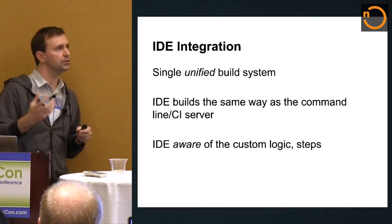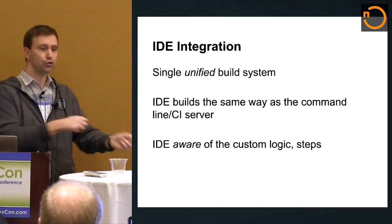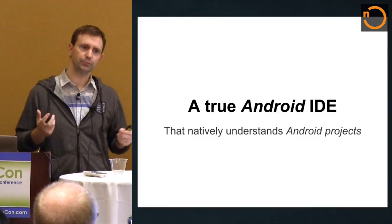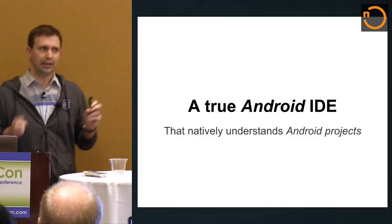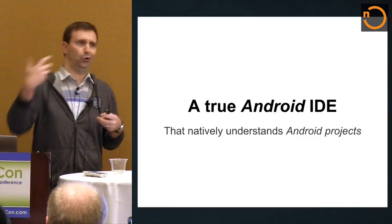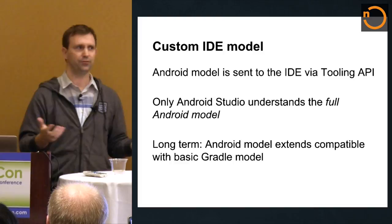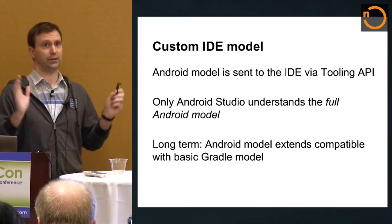Our goal was to create one true Android IDE. The Eclipse plugin didn't really feel like a good Android IDE — it felt more like we were plugging some Android features into Eclipse. With our custom model, Studio can really understand everything you've defined: the flavor, the variant, and all of that. It just works great. Studio is very aware of everything you're doing.